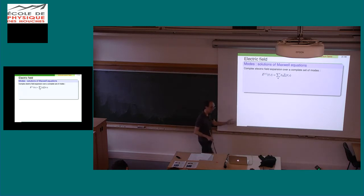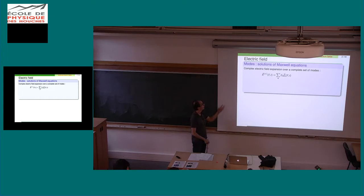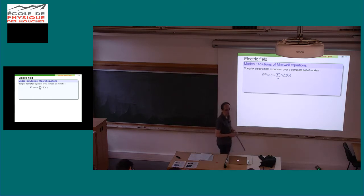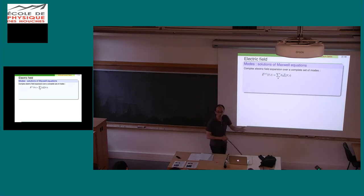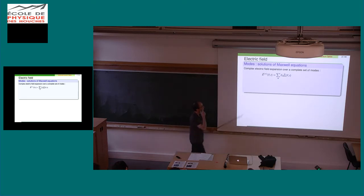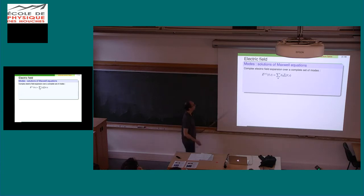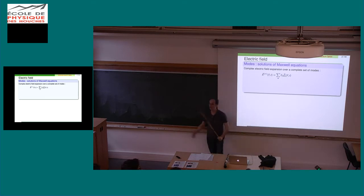I want to remind you how we quantize — or rather, how we write the multimode quantum field. To do that, we first consider the classical electric field, and I will always write the complex electric field. When you have a complex electric field, you have Maxwell's equations. You find eigenmodes of Maxwell's equations — usually plane waves because it's simpler, but in fact it can be anything: Laguerre-Gauss modes, Hermite-Gauss modes, frequency modes, optical pulses, polarization modes. So within this, you have many degrees of freedom.